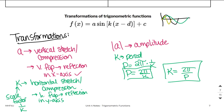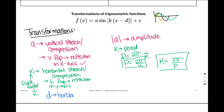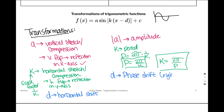The d value always tells us the horizontal shift — are we moving right or are we moving left? It doesn't have any impact on the size of the graph. In a sine function, this is always called a phase shift, but it's the same thing: are you moving right or moving left?